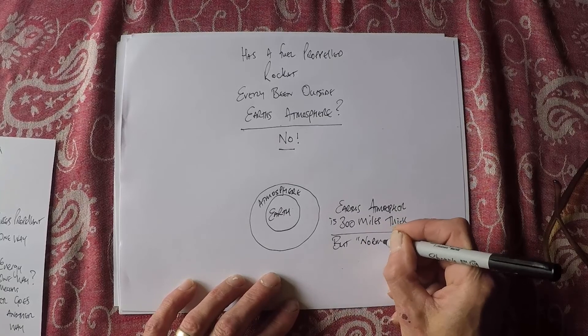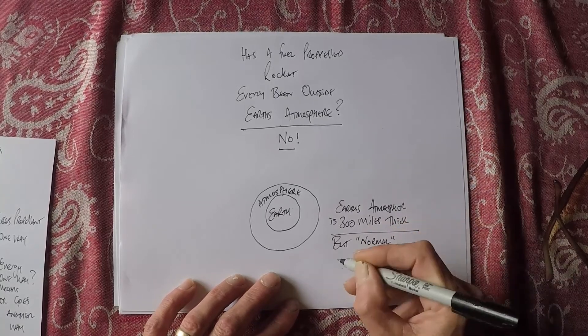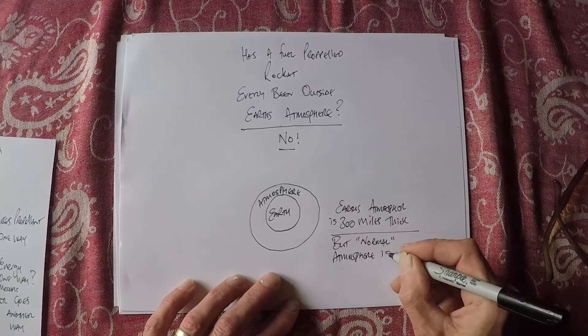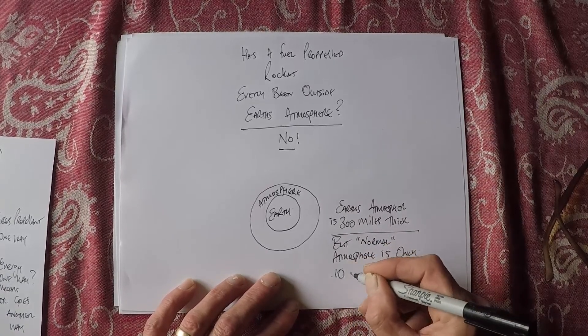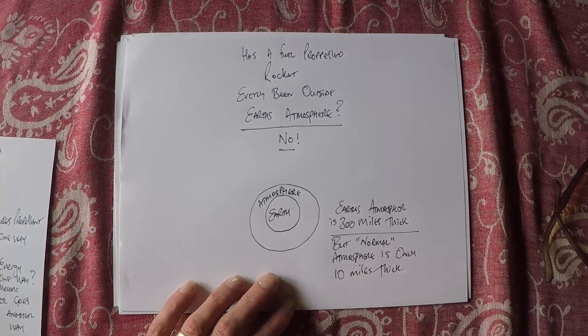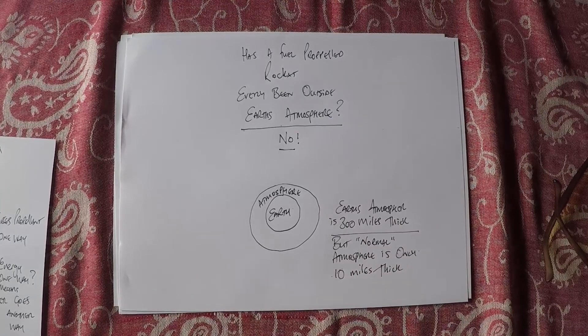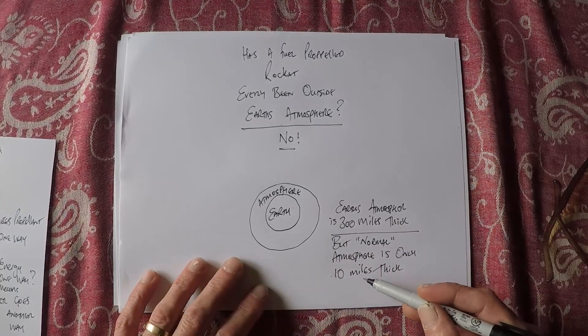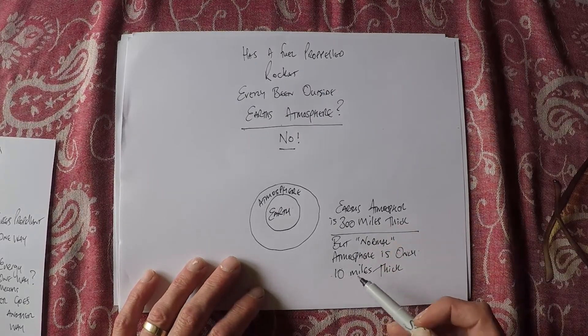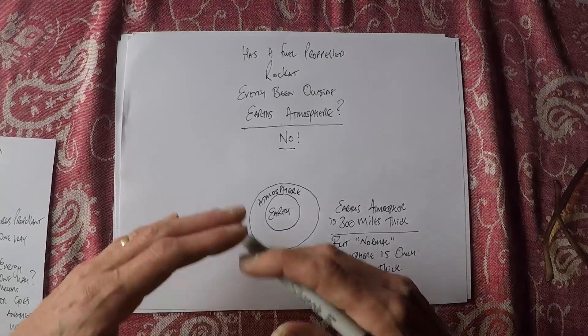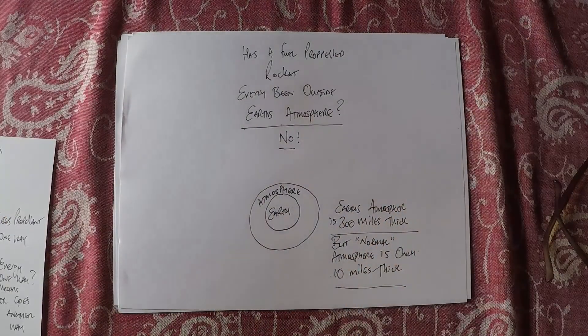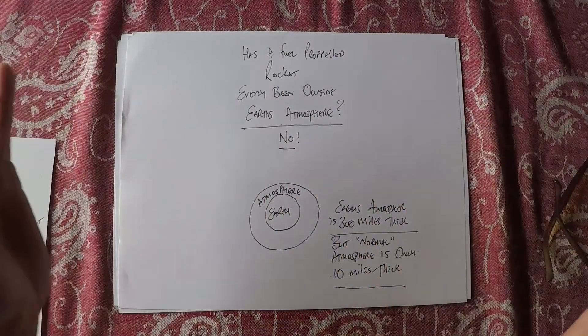But I'm going to put this in brackets, normal atmosphere is only 10 miles thick, which is quite a difference. That's quite a jump of powers from 10 miles to 300. But the normal atmosphere is about 10 miles thick and then due to the roundness of the planet as you go out everything moves apart and so everything becomes more separated.